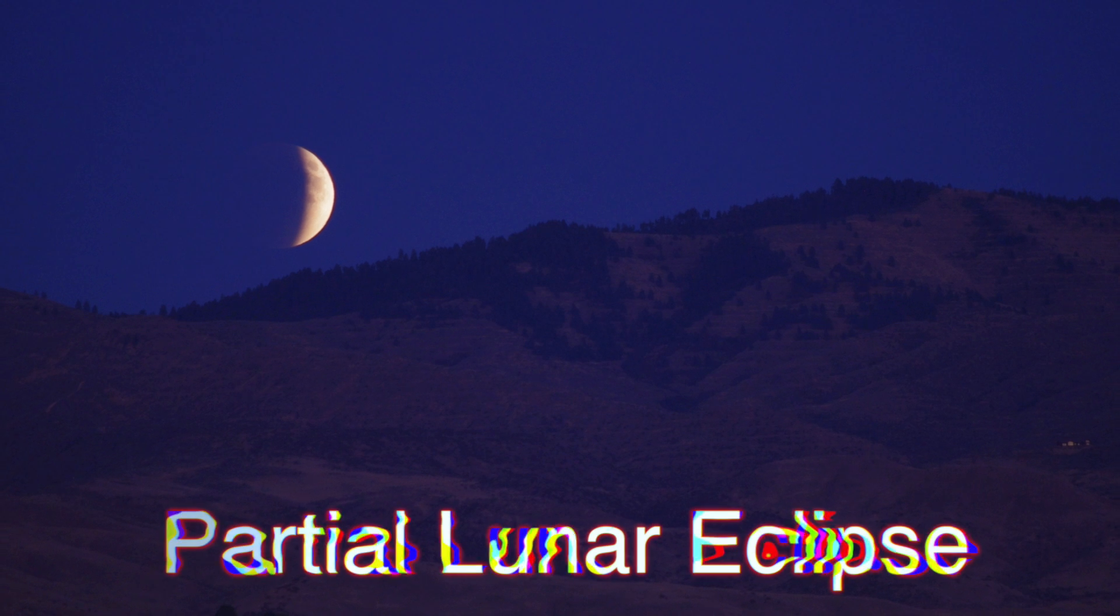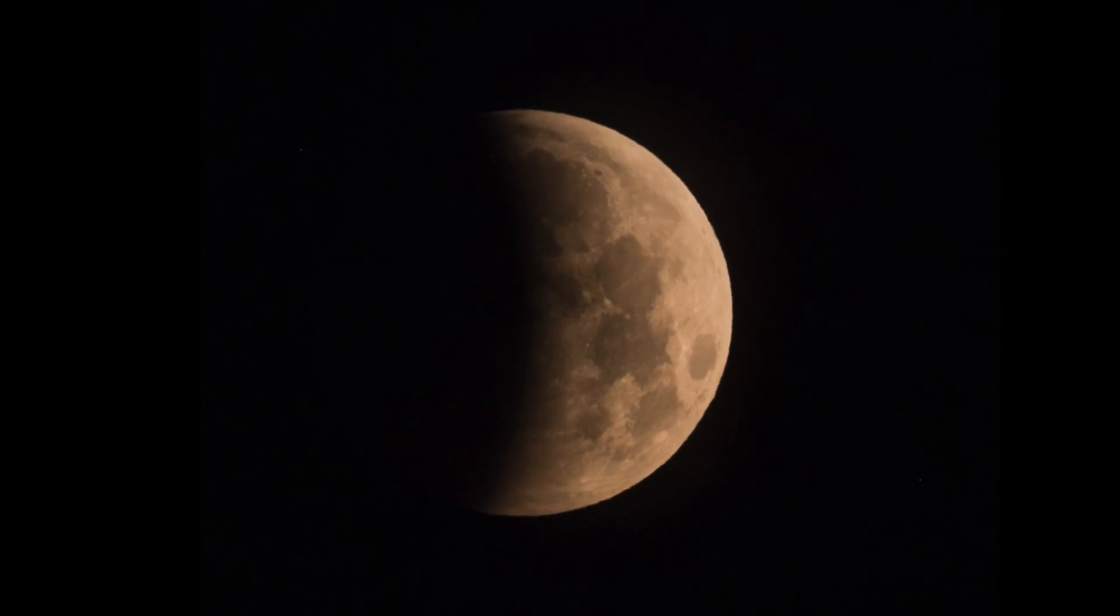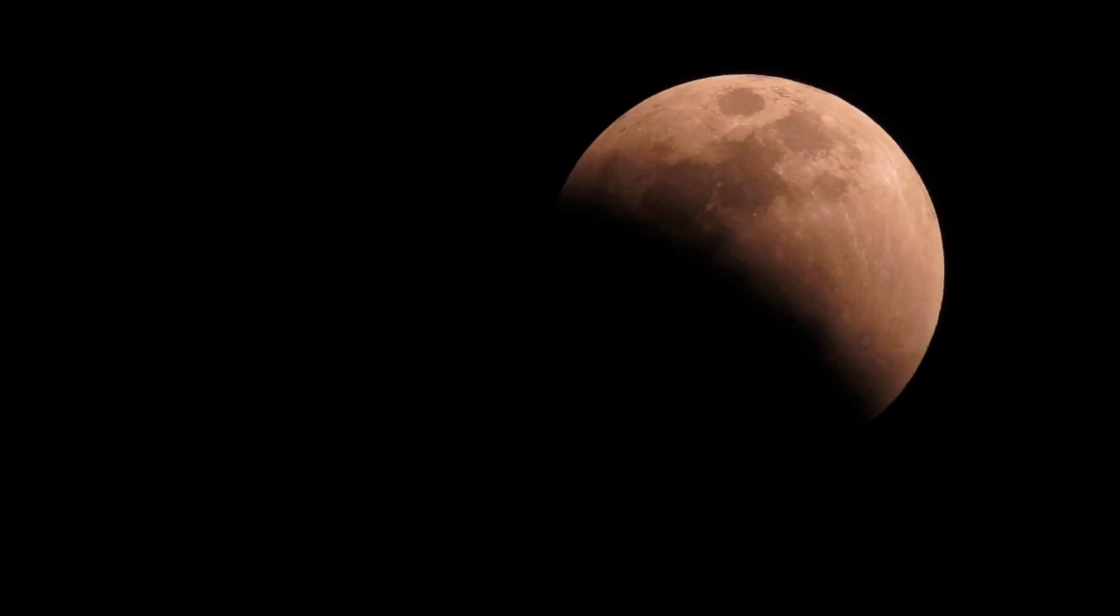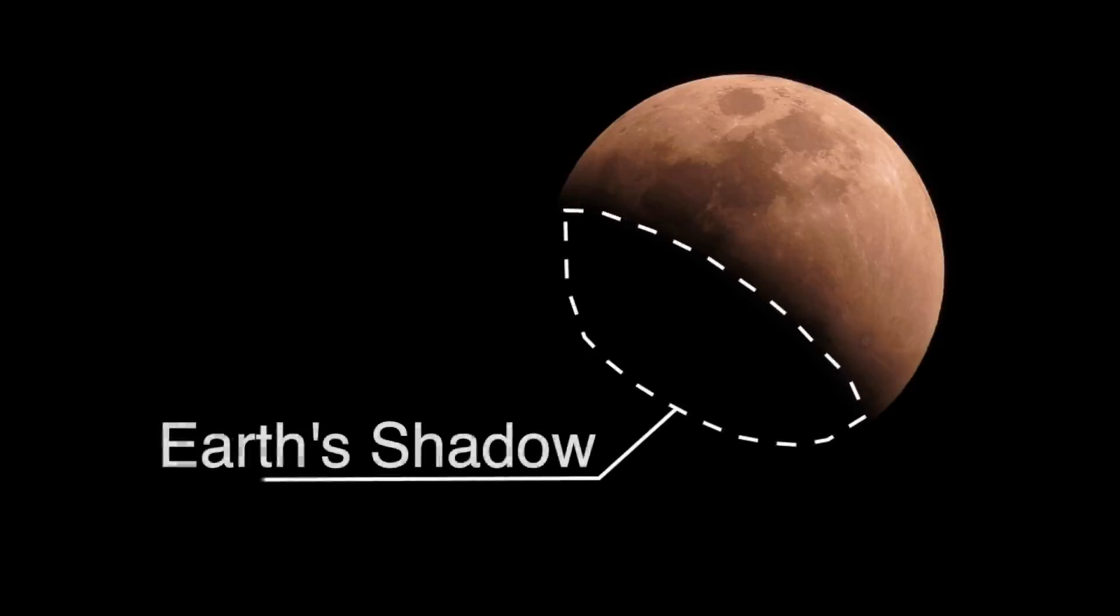The second type of the eclipse is a bit more frequent. A partial lunar eclipse occurs when the Earth's shadow does not completely cover the moon's disk. For this reason, the Earth's shadow appears very dark on the side of the moon facing Earth.